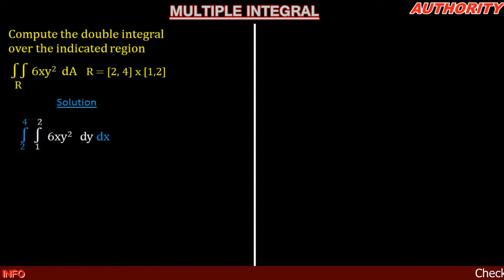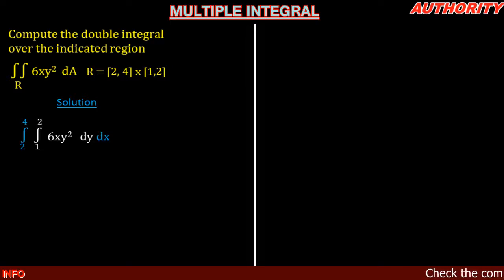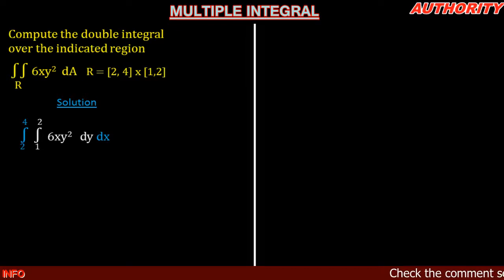Here we have the variable 6xy². Have you heard of FIFO and PHILO? FIFO means first in first out, and PHILO means first in last out. The integral from 2 to 4 is x — we started with x, so we're going to end with x.